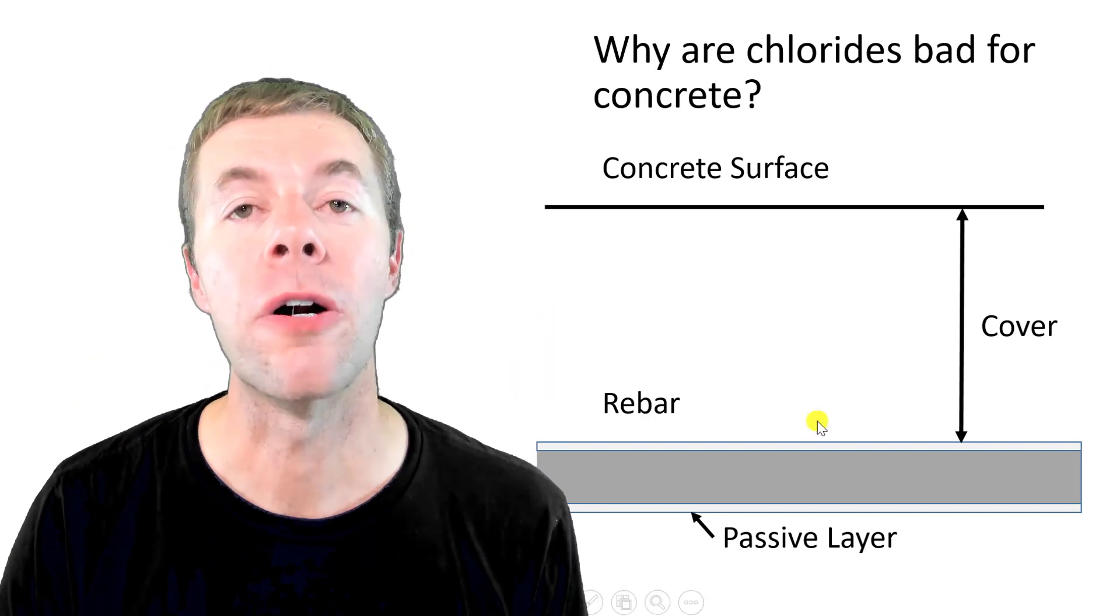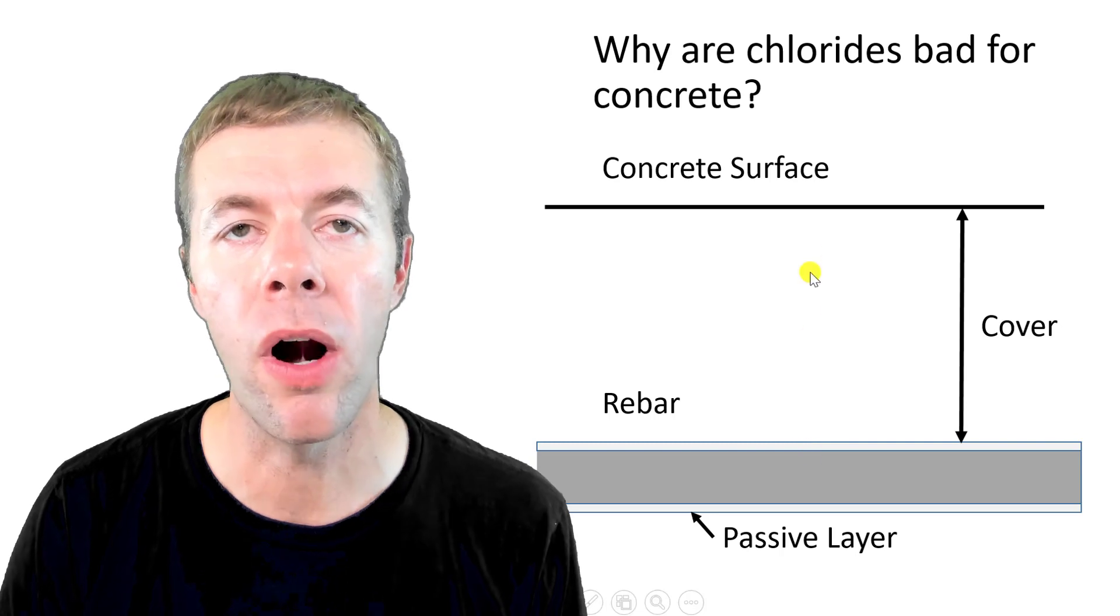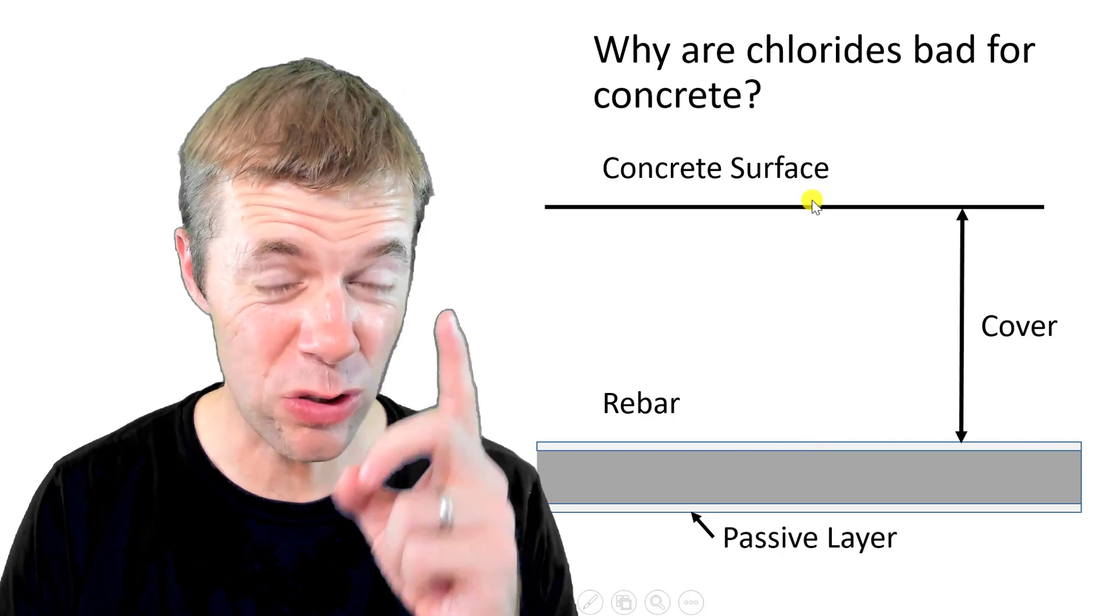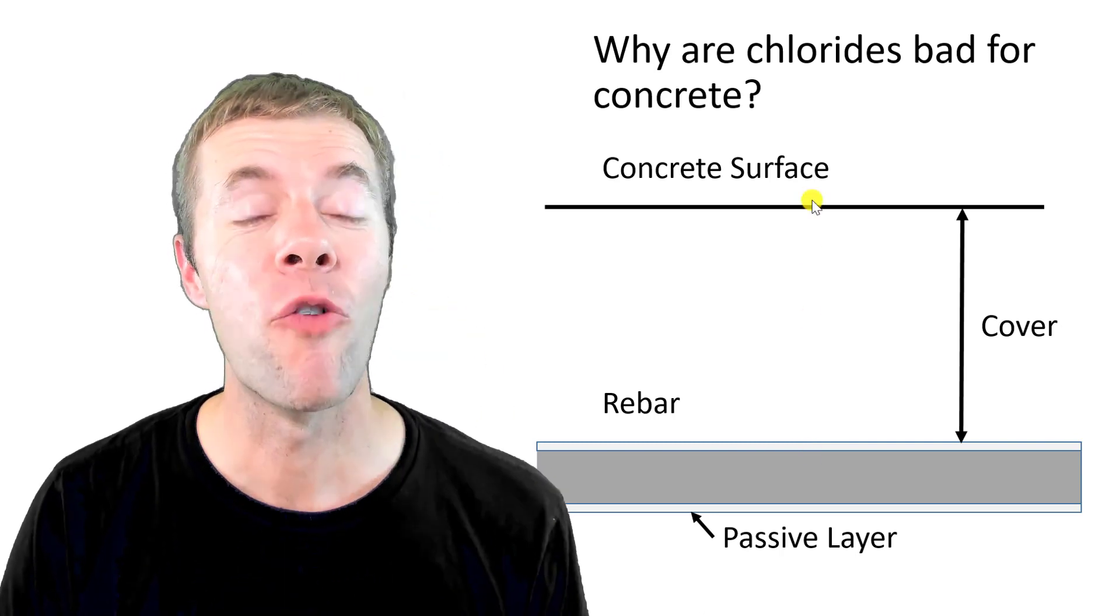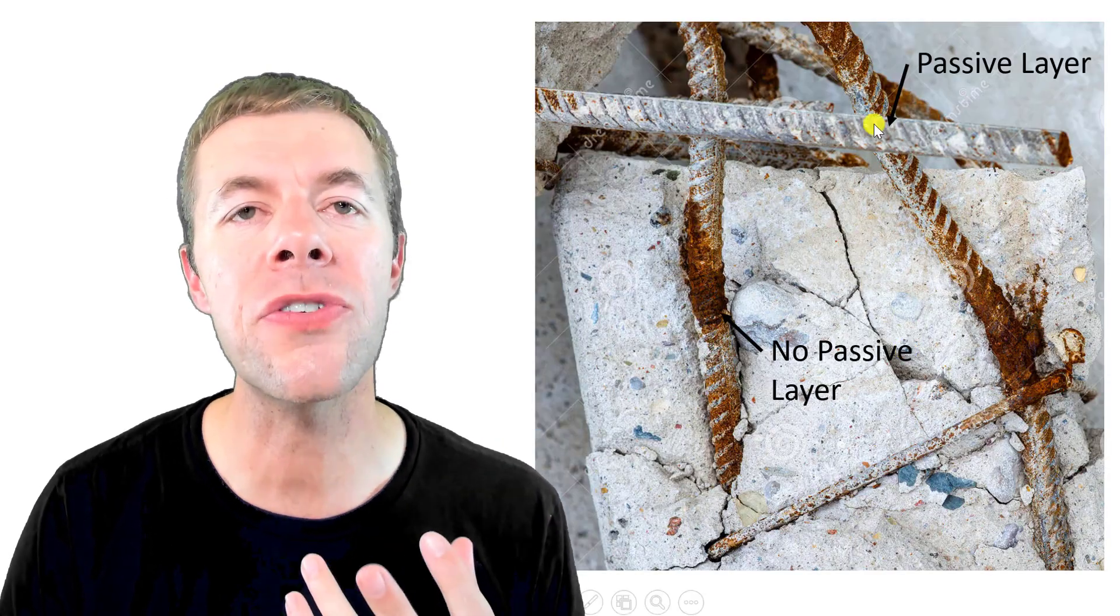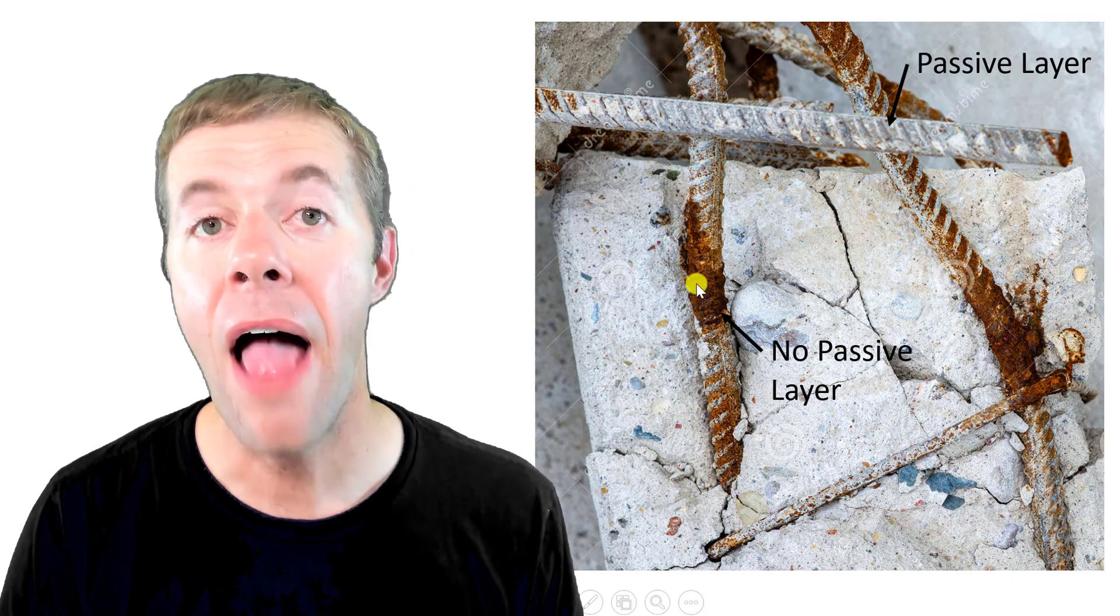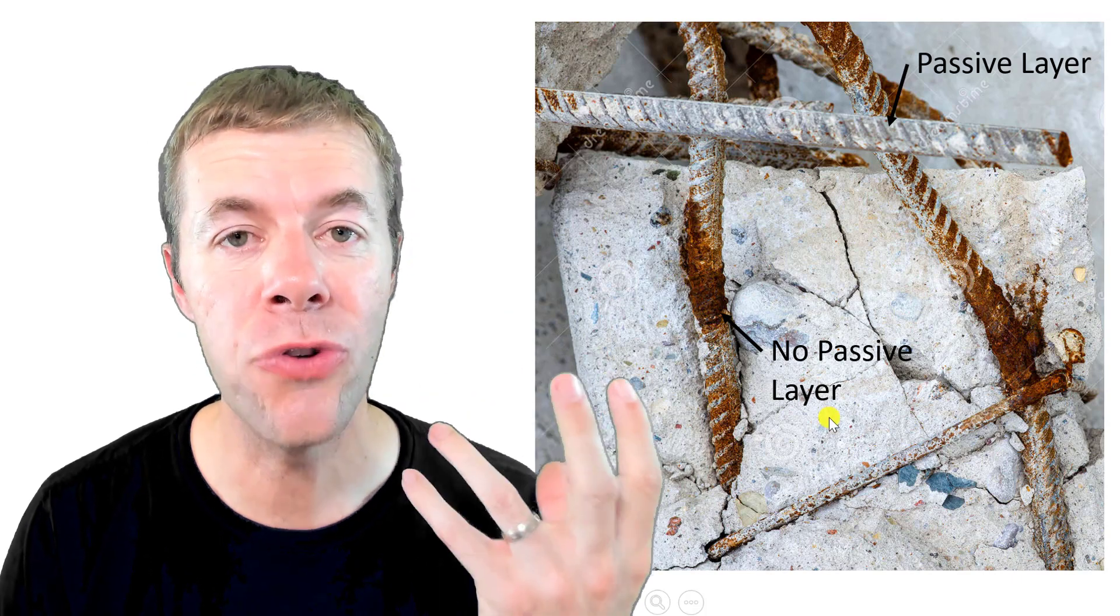This is the cover. The cover is the distance from the surface of the rebar to the surface of the concrete and it is also crazy important for protecting our rebar. This is what it looks like inside of concrete. This is the passive layer, this white material that forms on the surface. And this is where the passive layer is no longer present.